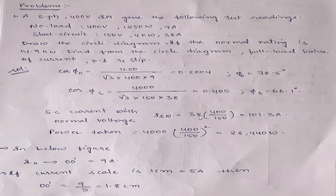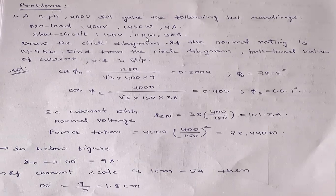From the same formula, we can calculate the power: PSN equals 4000 into (400 by 150) whole squared. This becomes 28,440 watts. So see here in the figure: this is the figure for our problem. This is I naught, O to O'. This is the O' point.